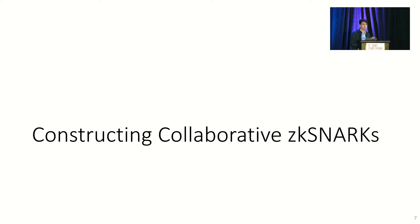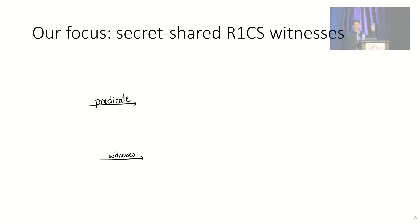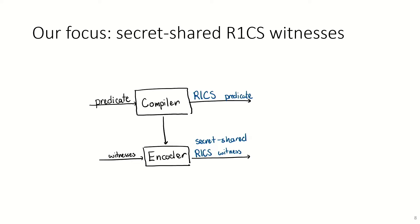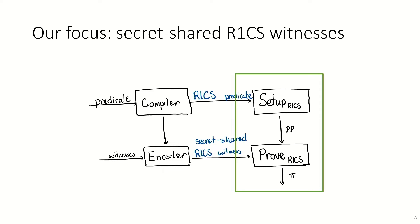But let's move on to constructions. Before I get into the constructions in full, I need to clarify the scope of the proof systems that we develop in this paper. In particular, so far, I've been talking about an abstract predicate and abstract witnesses. And of course, that's not something that you can build a proof system for. So in particular, we assume a preprocessing phase where we compile the predicate from whatever arbitrary form it has originally into a specific format called R1CS, the same format that traditional zero-knowledge proofs use. Moreover, this compiler outputs an encoder which transforms the witnesses from their original distributed form into an R1CS witness that is secret-shared among the provers.